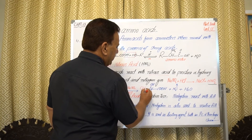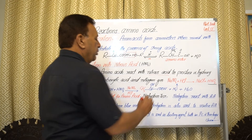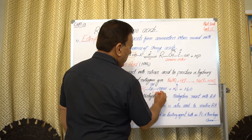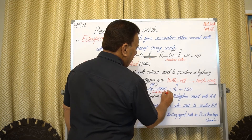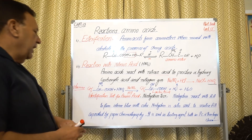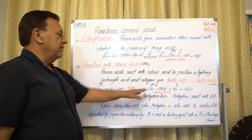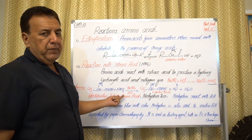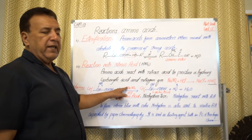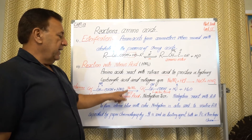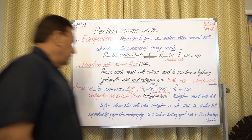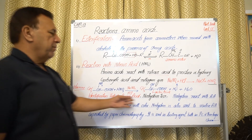For example, alanine (an amino acid) is converted into lactic acid. So amino acid is converted into lactic acid when it is mixed with nitrous acid. Nitrous acid in turn is produced by the reaction of sodium nitrite and hydrochloric acid.